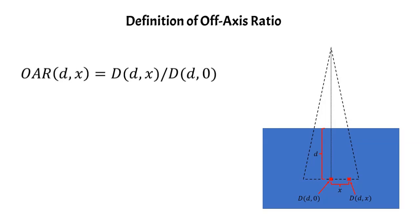So to get the off-axis ratio for this point, you would just measure the dose at depth d, off-axis distance x, and then measure the dose along the central axis at the same depth, and just take the ratio of the two. And that's how the off-axis ratio is defined. So it's always relative to the central axis dose.